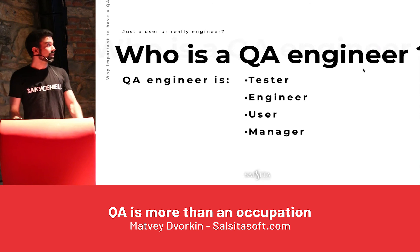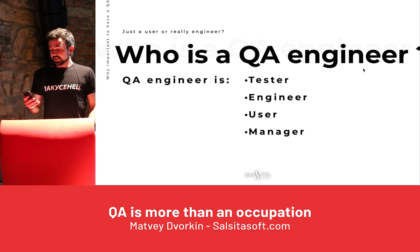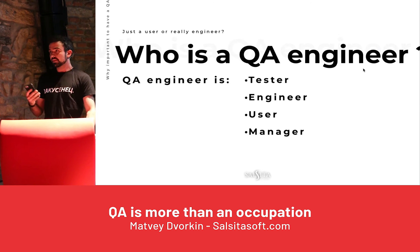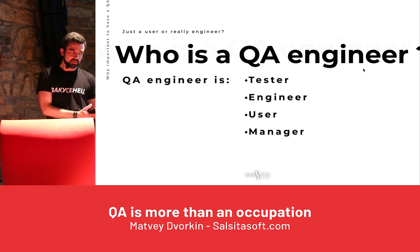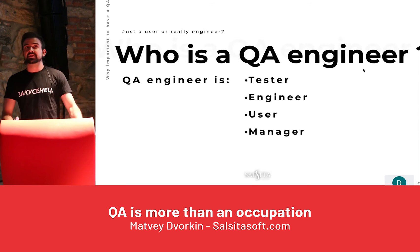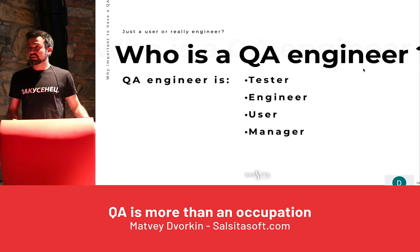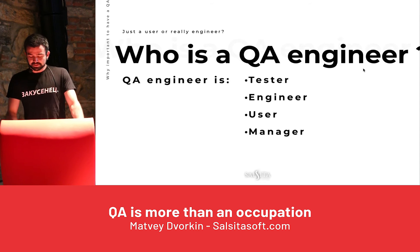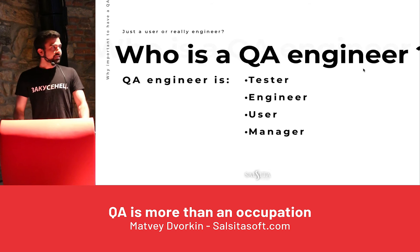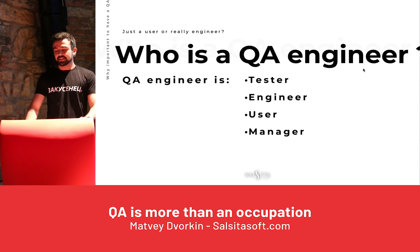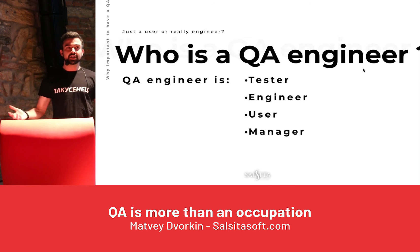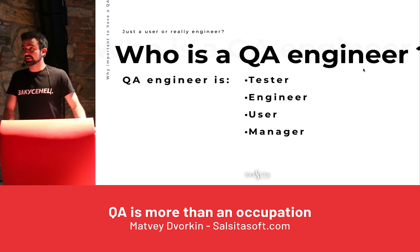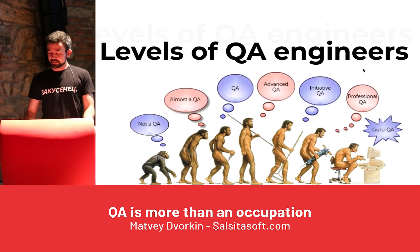The last two things in this list: QA is a user — he should understand what this app or feature was created for and behave as any user that will use it. I will touch on this a bit later. And as a manager, he should understand how to do his work better, not lose time on checking features that are not very important, and know how to manage his time on testing.